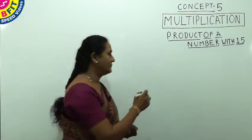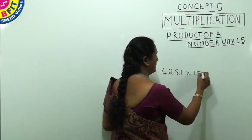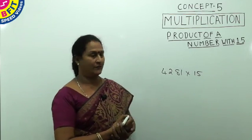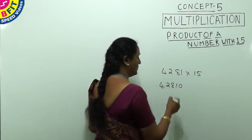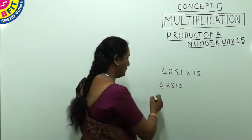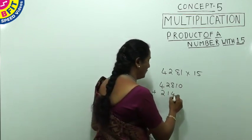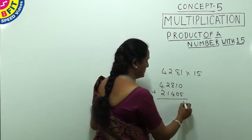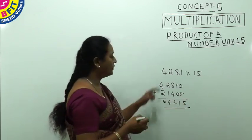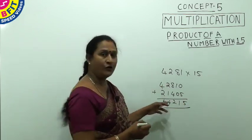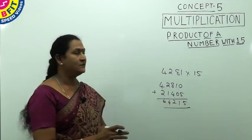The second question is 4281 × 15. Add one zero to the given number to get 42810, then add half of 42810, which is 21405. Adding these gives the product of 4281 × 15 = 64215.